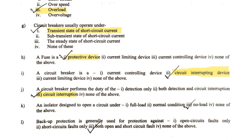The next question: an isolator is designed to open a circuit under what condition — full load condition, normal condition, no load condition, or none of the above? An isolator basically operates under no load condition, meaning when there is no current in the circuit. So option three — no load condition — is the correct answer.